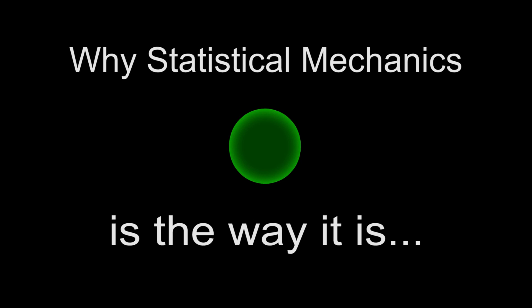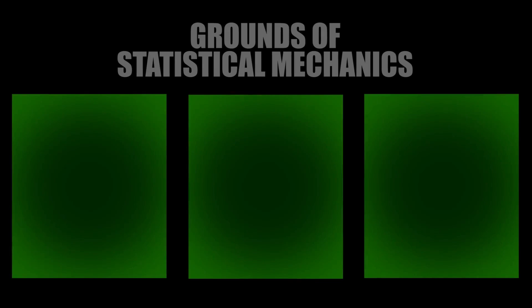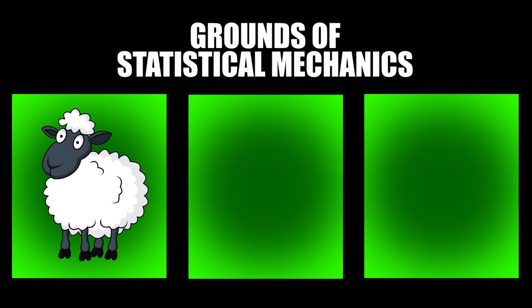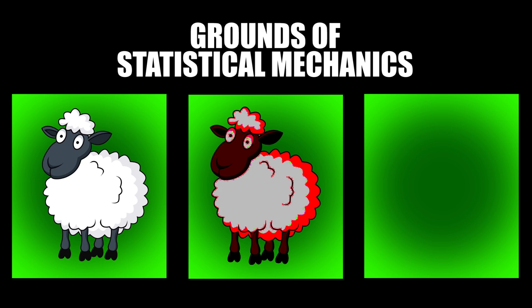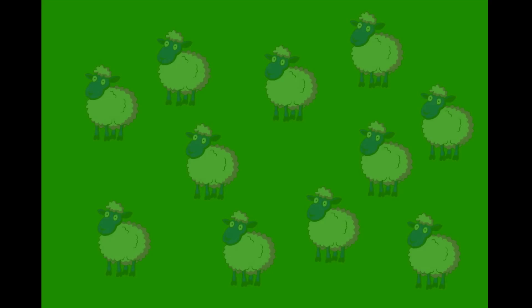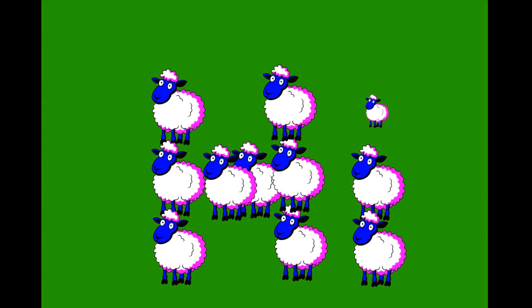Now in here we are dealing with particles. But for the sake of understanding and to understand why statistical mechanics is the way it is, we will deal with sheep. Imagine there are three big grounds and in each ground there is a different type of sheep. In the first ground we have the Maxwell-Boltzmann sheep or the classical sheep. In the second ground we have the Bose-Einstein sheep or the Boson sheep. And in the third one we have the Fermi-Dirac sheep or the Fermion sheep. Statistical mechanics is all about how these sheep will arrange themselves when they are freed on the ground.